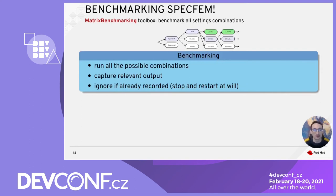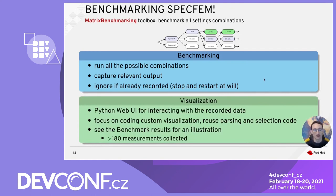The Matrix Benchmarking tool is split into two parts. The first part performs the benchmarking — running all possible combinations and capturing the relevant output, in this case execution time. The benchmark ignores results that have already been recorded, allowing the complete benchmark to be stopped and restarted at will. The second part is a visualization interface built on the Python frameworks Dash and Plotly, allowing interaction with the recorded data. The framework lets developers focus on coding custom visualizations while parsing and data selection code is reused. In the following section, we'll see output from this benchmark where we collected more than 180 measurements for SPECFEM alone.